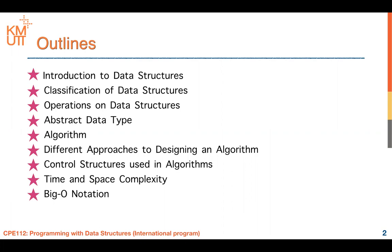Sometimes data structures can be called abstract data types, so I'm going to talk about the meaning or definition of abstract data type. And for algorithms, I will talk about the meaning of algorithms and different approaches to design an algorithm. The next topic is control structures using algorithms. The most important part you have to know in this course is time and space complexity, and how to measure the efficiency of algorithms using Big O notation. This will be just an overview — only time and space complexity and Big O notation will go into detail.